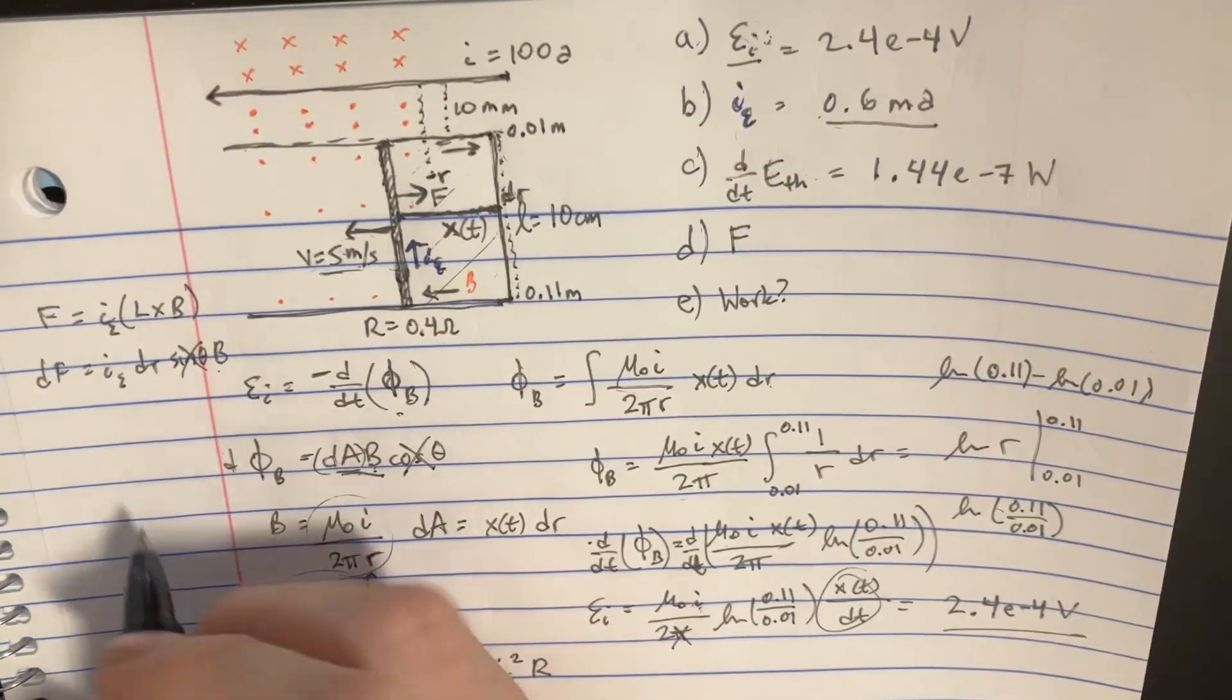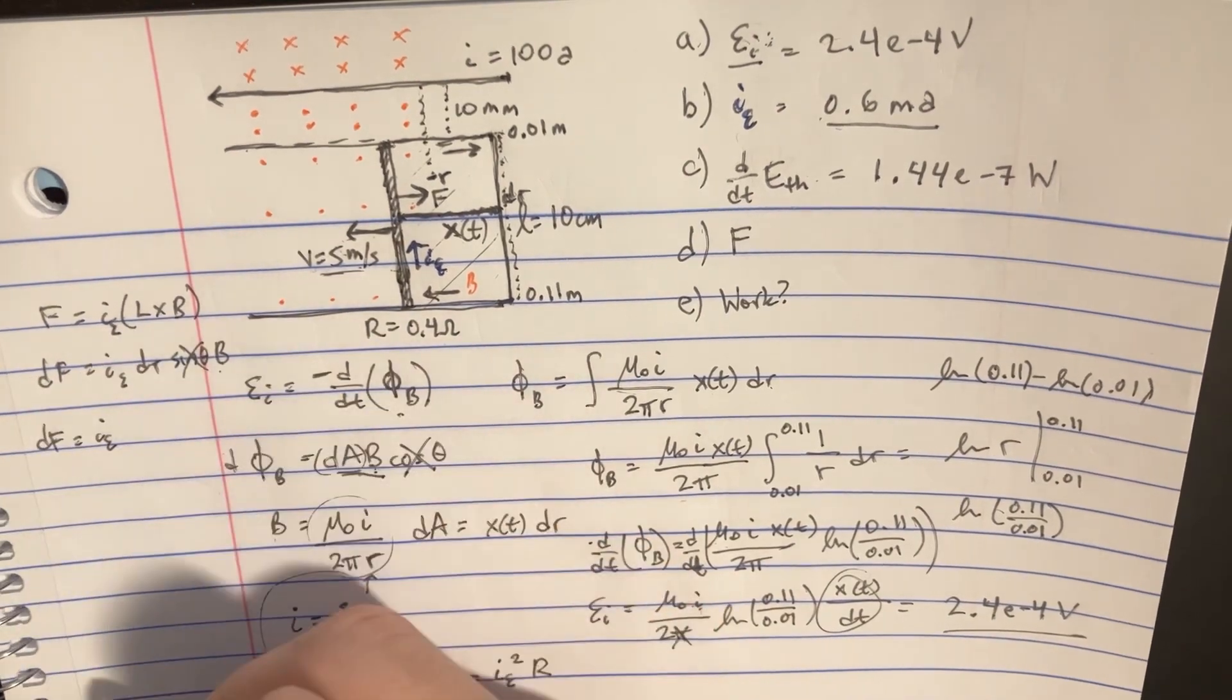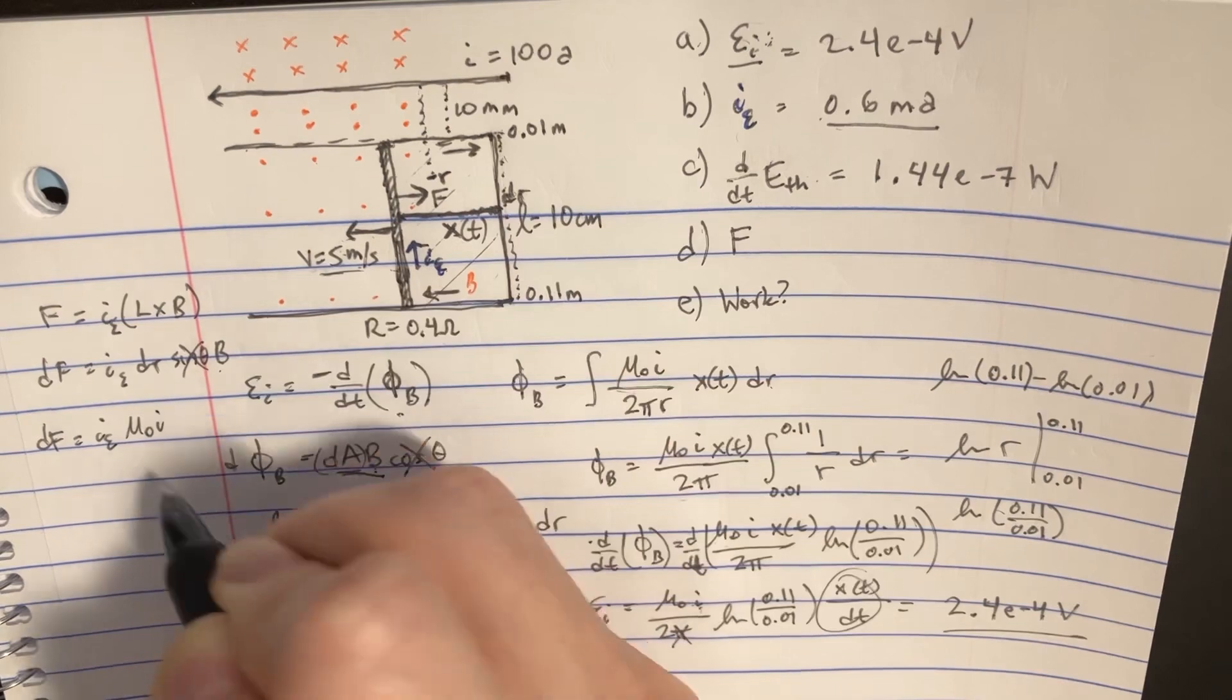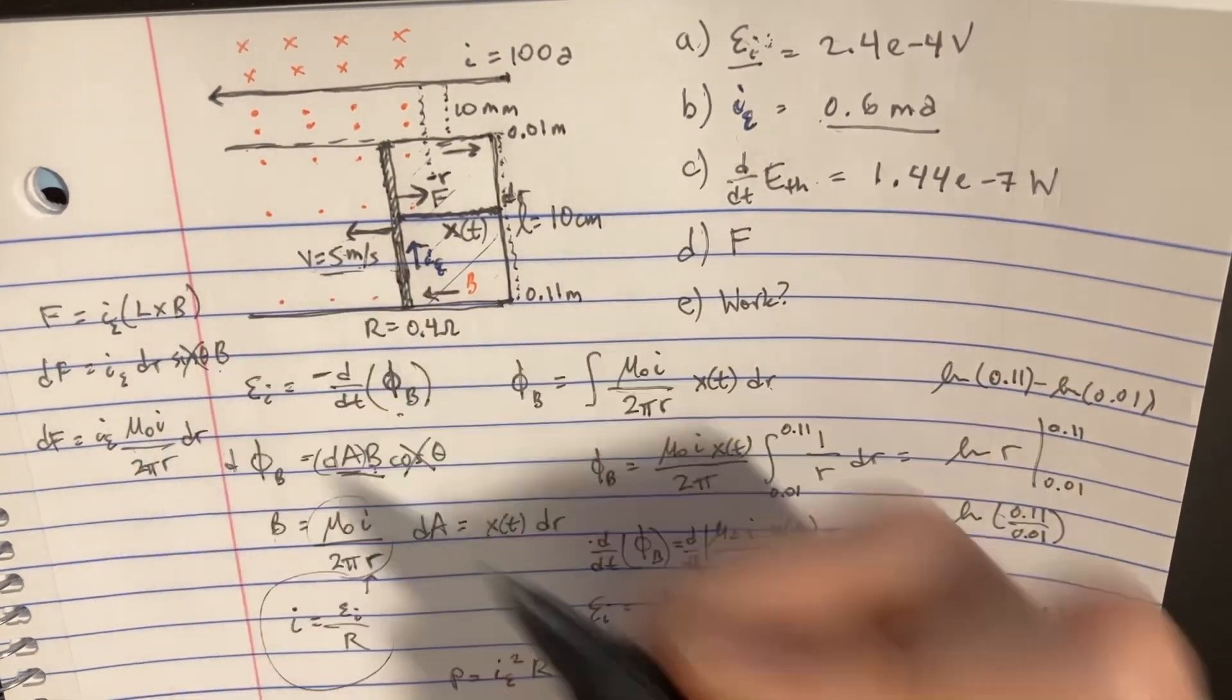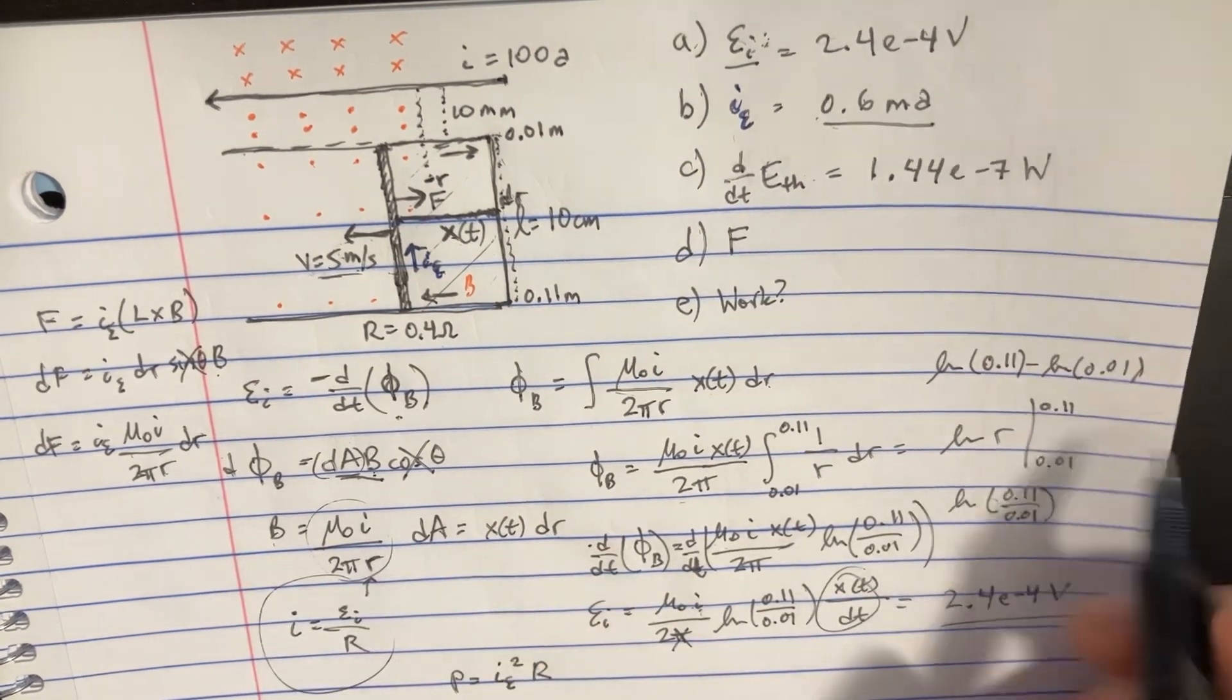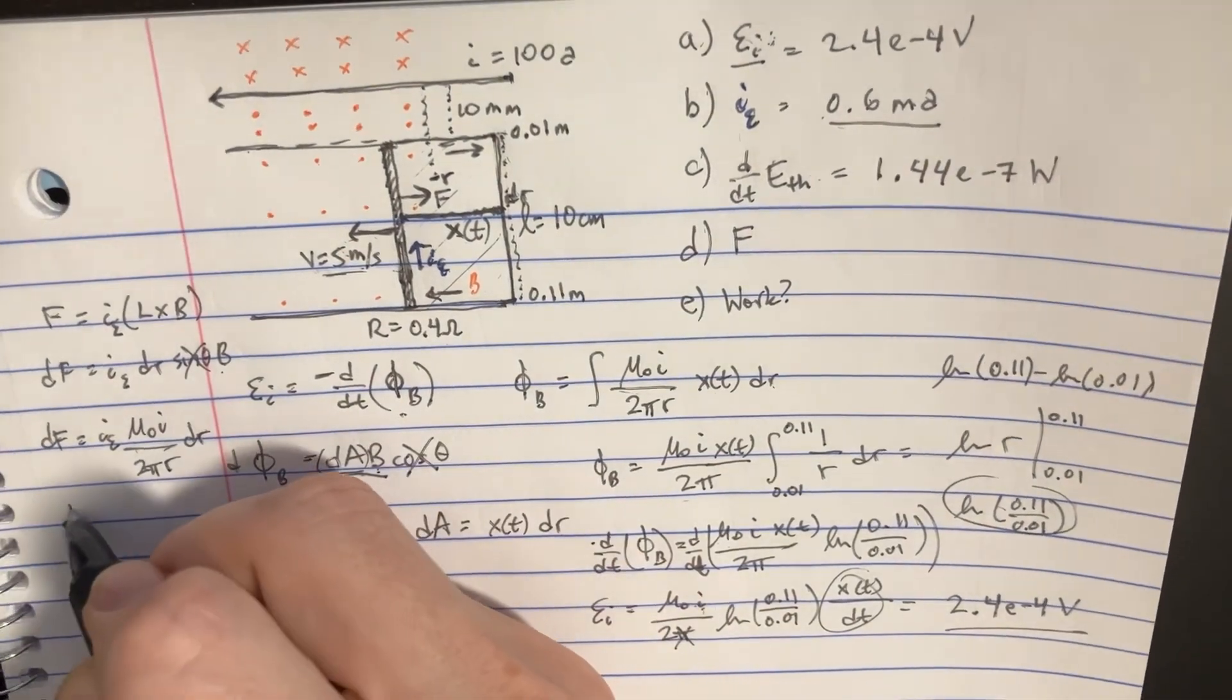So we kind of have df equals this i_e. And then there's the mu naught i over 2 pi r dr. And if we're doing this r dr integral again, it's going to end up being the same answer that we had over here. So let's just kind of do that real quick.